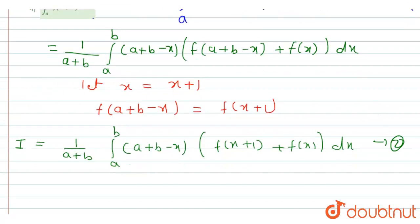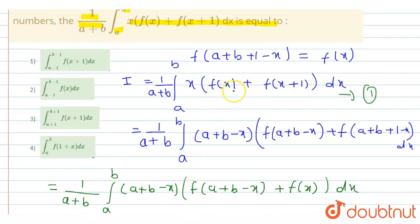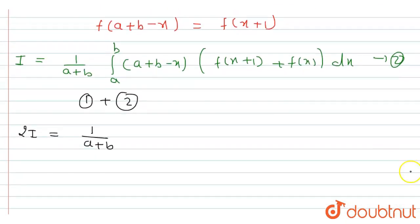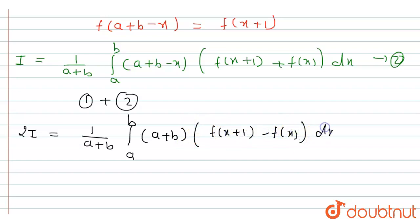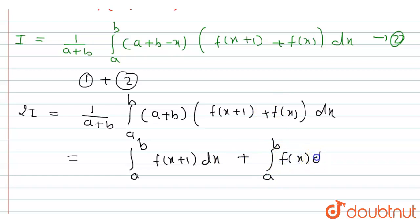When we add both forms of the integration — first plus second — we obtain 2I = 1/(a+b) · ∫[a to b] [(a+b)·(f(x+1) + f(x))] dx, since the x·f(x+1) and -x·f(x+1) terms cancel. The (a+b) factors cancel, leaving 2I = ∫[a to b] f(x+1) dx - ∫[a to b] f(x) dx.